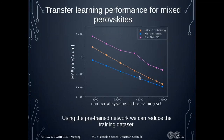We performed transfer learning: taking the pre-trained network and adding some training data for mixed perovskites. The network with pre-training — trained on the large dataset — performs a lot better. In this way, by having a structure-aware model, we can save a lot of calculation time for extra training data.